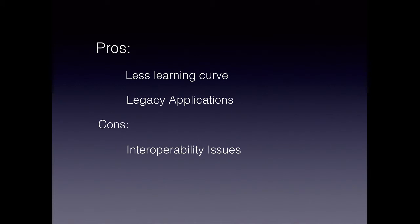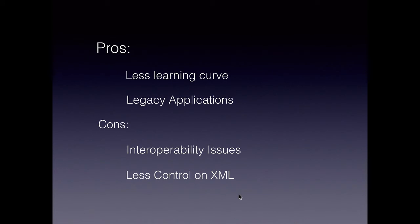The disadvantages: we can have interoperability issues, especially if we start using all the data structures available in a particular programming language and another platform doesn't support it — then the message that goes out cannot be converted back into another platform's data structure, so you should be careful with the code first approach. Another disadvantage is less control on the XML that gets generated. In the contract first approach, since we define the schema and everything from scratch in the WSDL file, we have more control on the request and response XMLs.